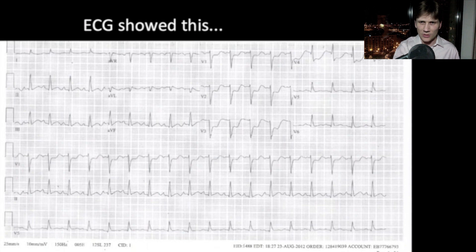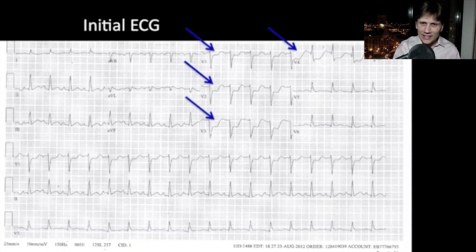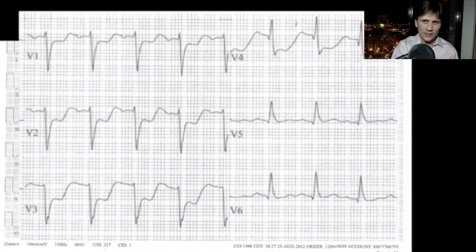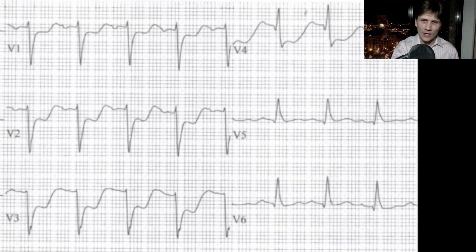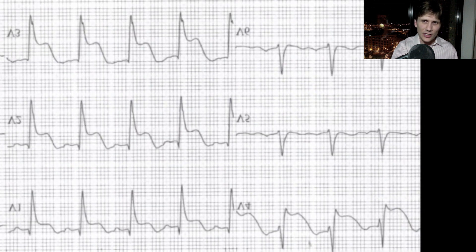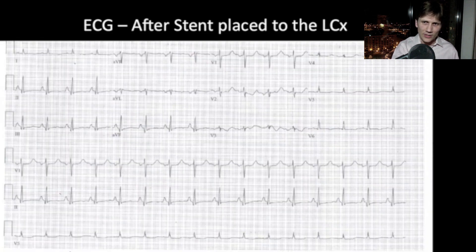Here's her EKG, and this is not normal. We have ST depressions in V1 through V4 — and what do these represent? This is a STEMI — a posterior STEMI. Remember that posterior MIs actually present as ST depression. And if you flip the EKG upside down and hold it up to the light, you can see that the morphology is exactly the same as your usual STEMIs. A stent was placed in the prior stent, and you can see that the EKG normalized.